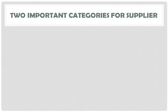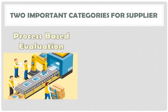We have two important categories for supplier evaluation to determine who will be the suitable supplier. Number one is the process-based evaluation. This evaluation is one of the methods on how the supplier can produce the raw materials. Here, the buyer finds out how the products or raw materials are being made — looking at how it's done from start to end.